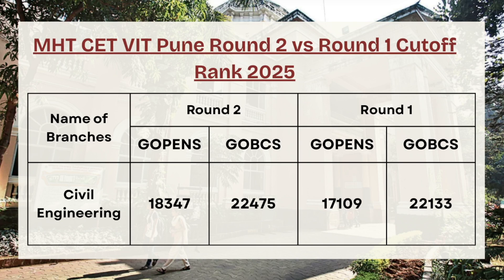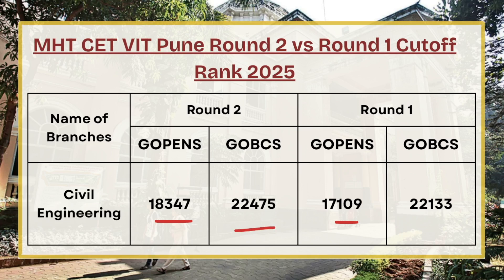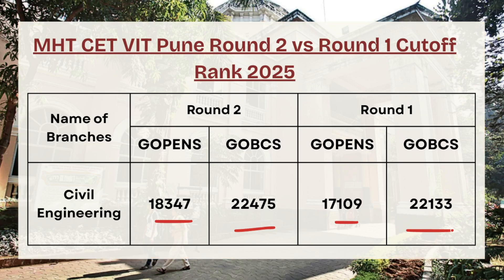First in the list we have Civil Engineering. For round two, G Open category the cutoff rank was 18,347, whereas in round one the cutoff rank was 17,109. For G OBC category, the cutoff rank is 22,475 for round two, whereas in round one it was 22,133. There is almost a slight increment in G Open and a difference of around 200 ranks in G OBC category between round one and round two.